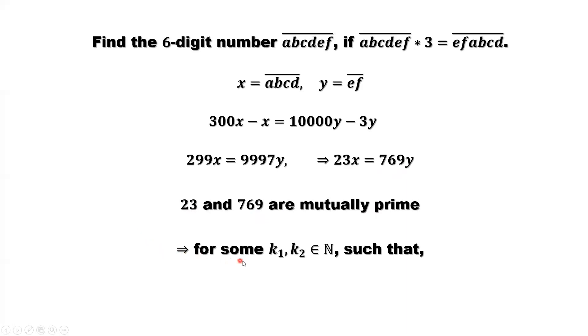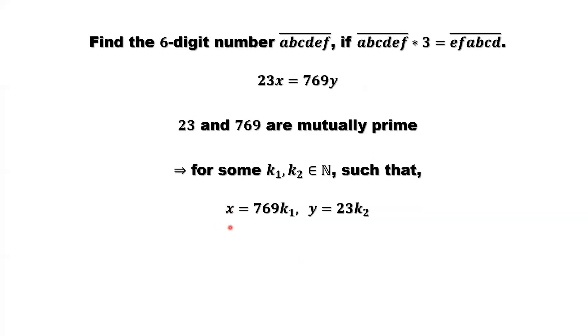We imply, therefore, some K, K1, K2. Both are natural numbers. Such that X equals 769 times K1. What does this mean? Look at this expression. Left-hand side, you have X. Right-hand side, you have 769. 769 and 23, we do not have common factors. This implies X must have 769 as a factor. So X equals 769 times a constant, K1.